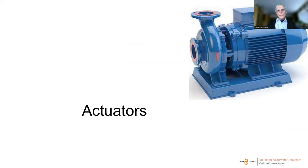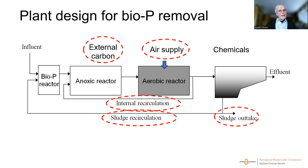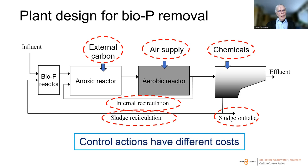Now let's turn to actuators — those that translate a computer signal into power, from brain to muscles. Actuators can be pumps, motors, valves, and so on. Looking at a BioP removal system, there are several control actions: air supply, internal recirculation of nitrate, return sludge flow rate, sludge outtake, adding external carbon, or adding chemicals. When looking at actuators, we also have to consider the cost of different control actions.